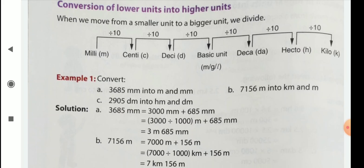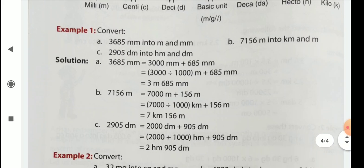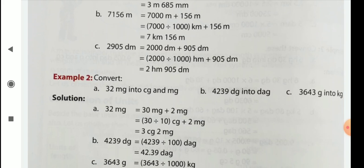Example 1: Convert 3685 millimeter into meter and millimeter. So 1 millimeter equal to how much? Just we divide by 1000. Then we get our answer. Then 685 just you add. Here also, same meter. B: 7156 meter into kilometer. Here we divide it by 1000. See the value, see the value and places.